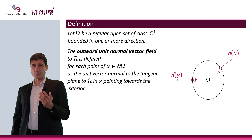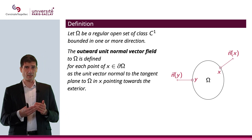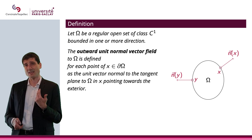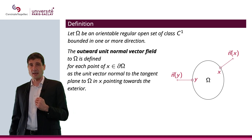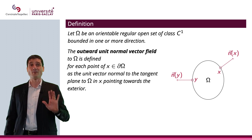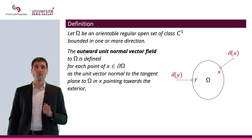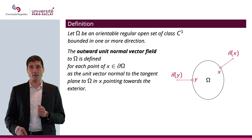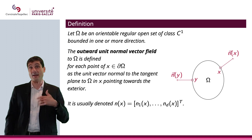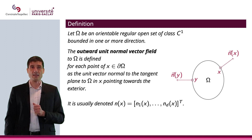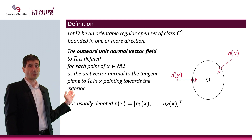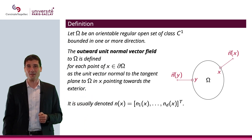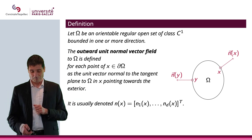Pointing toward the exterior assumes you can define where the exterior and interior are. For instance, if you take the Möbius strip or the Klein bottle, that's not going to be possible. So you need omega to be an orientable regular open set of class C^1. The outward unit normal vector field is often denoted n(x) — because it depends on the point of the boundary — written with components n_1 to n_d. I'm writing it as a row with a transpose T just to save space on the slide; the transpose of a row is a column.